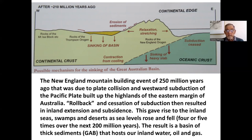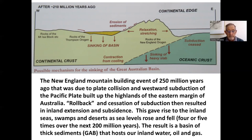The New England mountain-building event of 200 million years ago was due to plate collision and westward subduction of the Pacific Plate, building up the highlands of the eastern margins of Australia. A rollback of that subduction eastward, and its cessation, resulted in inland extension, giving rise to inland seas, swamps, and deserts. As sea level rose, you had incursions of marine conditions four or five times, particularly around 130 to 100 million years ago, resulting in the basin of thick sediments — the Great Australian Basin, particularly known as the Eromanga Basin — that hosts our inland water, oil, and some gas.